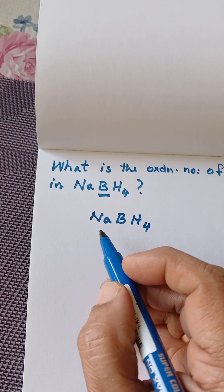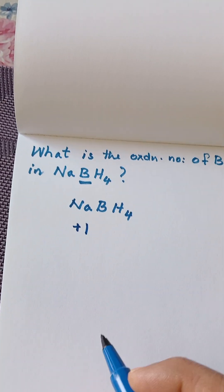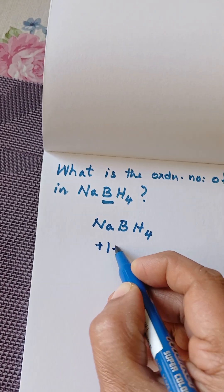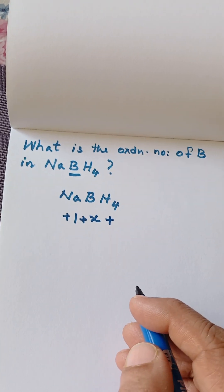Here we know sodium is an alkali metal, it is having plus 1 oxidation state or oxidation number. Then let us take X for boron plus there are 4 hydrogen atoms.